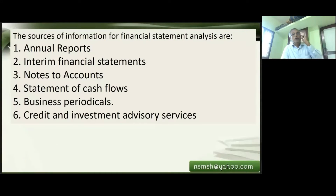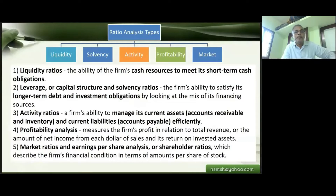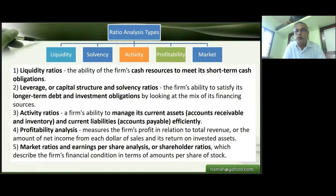From where do we take information for ratio calculation? The sources of information for financial statement analysis include annual reports, interim financial statements, notes to accounts, statement of cash flows, business periodicals, and credit and investment advisory services. In this lecture, we will discuss liquidity ratios in detail with exercise examples from the examination point of view.